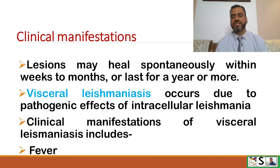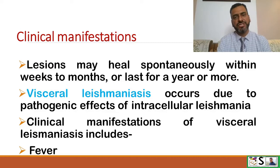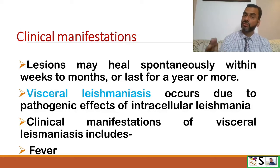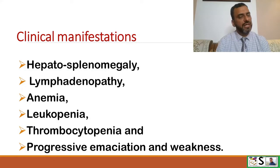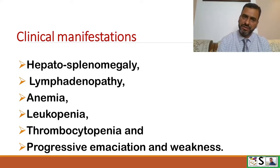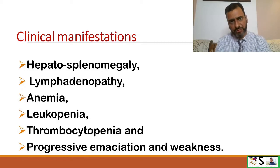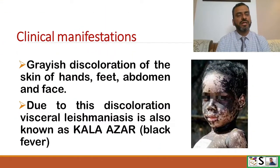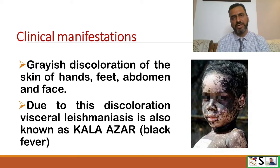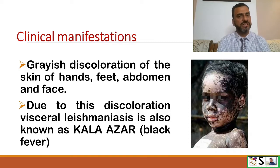Visceral Leishmaniasis occurs due to the pathogenic effect of intracellular Leishmania. Clinical manifestations include fever, hepatosplenomegaly — meaning enlargement of the spleen and liver — lymphadenopathy, anemia, leukopenia, thrombocytopenia, progressive emaciation and severe weakness, as well as grey discolouration of the skin of the hands, feet, abdomen, and face. Due to this discolouration, visceral Leishmaniasis is also known as Kala Azar.